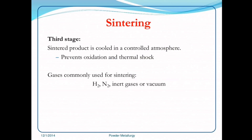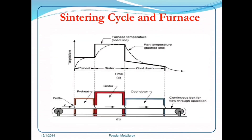Gases commonly used for sintering are hydrogen, nitrogen, inert gases, or vacuum. The sintering cycle diagram shows the three stages: first, the compact is preheated, then sintered, and finally cooled.